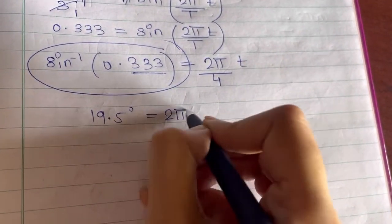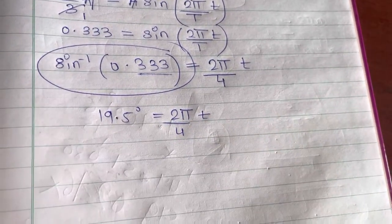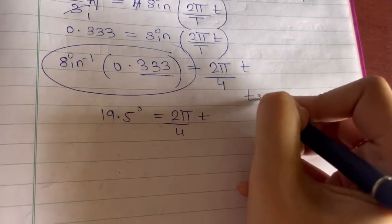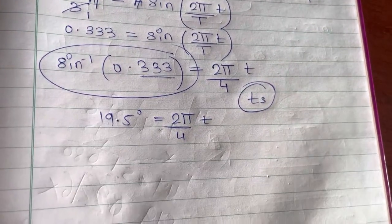Which is equal to 2 pi upon 4 and this t. Now this is in degree. I want the value of time in seconds. Of course. So I will convert this degree into radian.